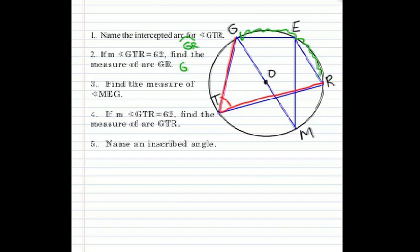Number two. If angle GTR is 62, find the measure of arc GR. As we discussed in the previous video, the inscribed angle is always half as long as the measure of the arc. So if the angle is 62, the arc has to be twice as much. So arc GR must be 124 degrees.